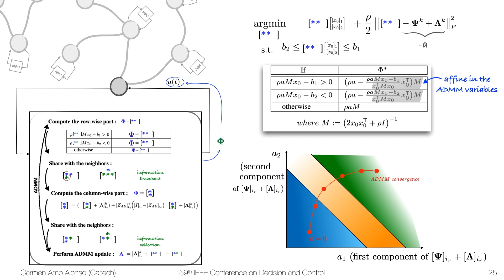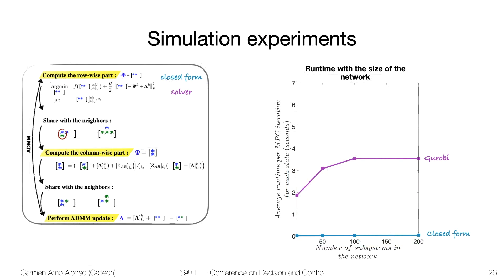And just to illustrate the impact of this reduction in complexity, we performed some simulation experiments. We took the exact same simulations as we used for the distributed and localized MPC work that I just presented, and tested out that the scenario that needed a solver could be solved with the explicit solution that we just developed. And if we look at the runtime per MPC iteration normalized per state in the subsystem, we see that not only it doesn't increase with the size of the network, which is something that we already saw in the previous presentation, but it's also much faster than the solver, and it's almost as fast as a closed-form solution.